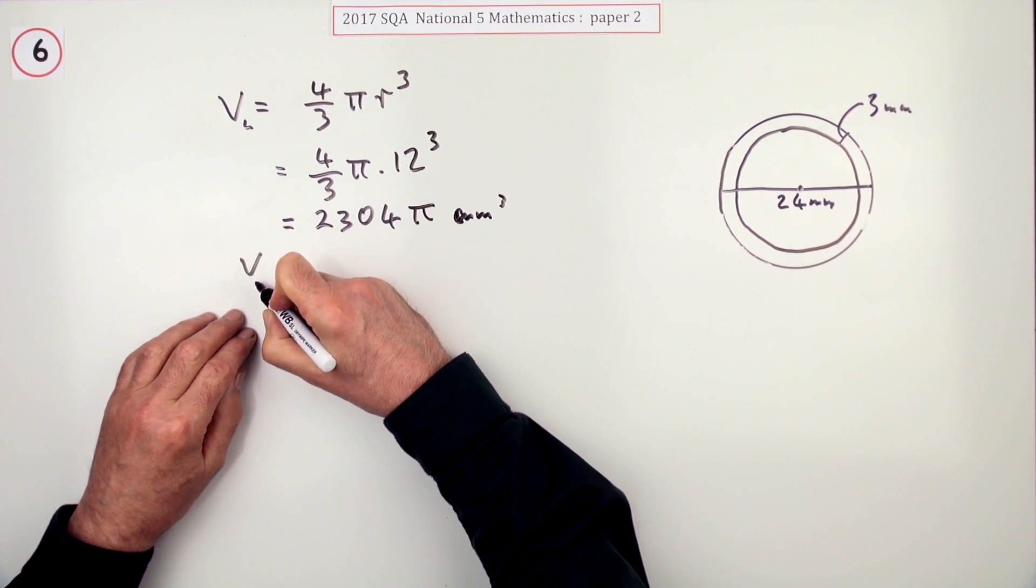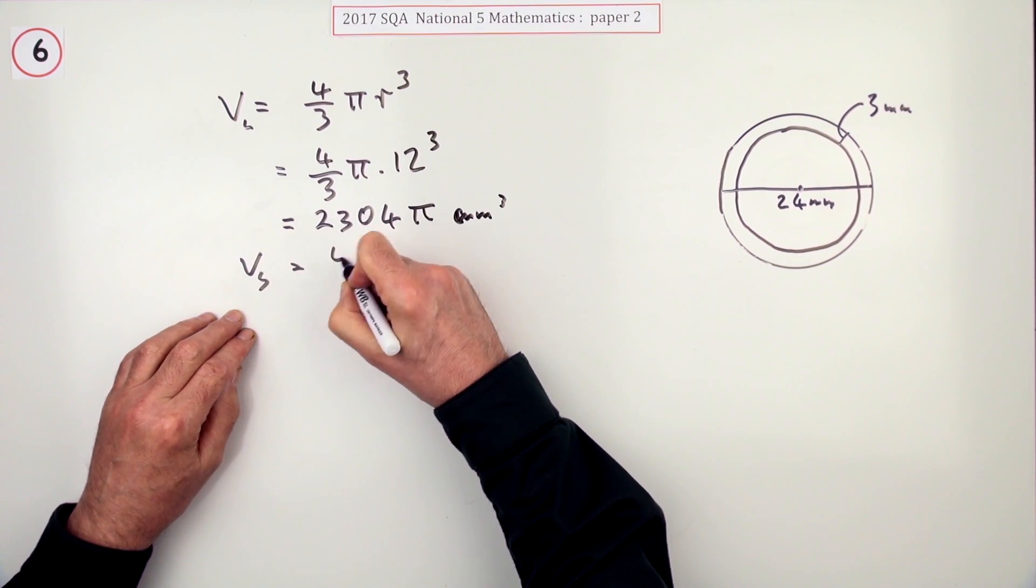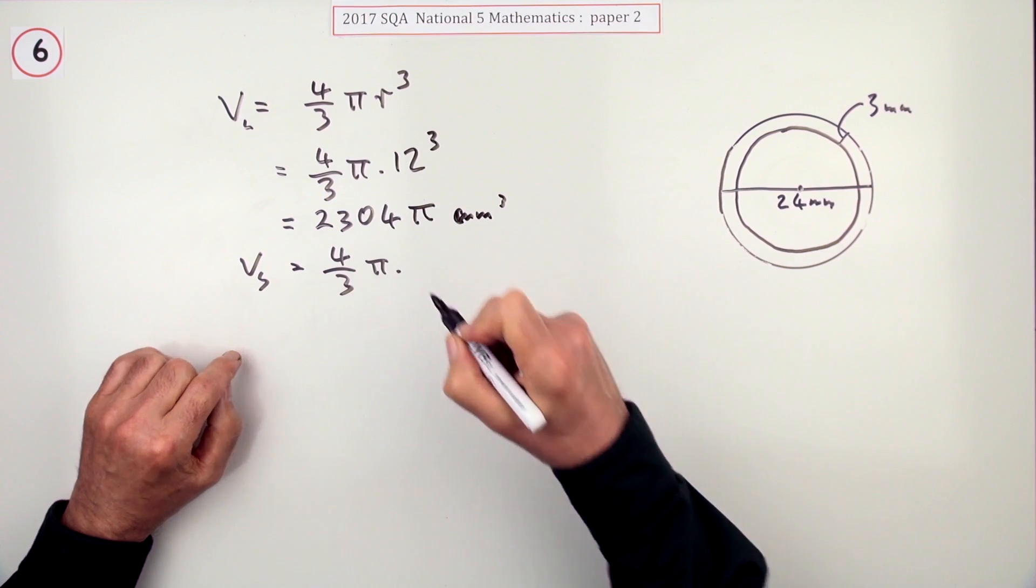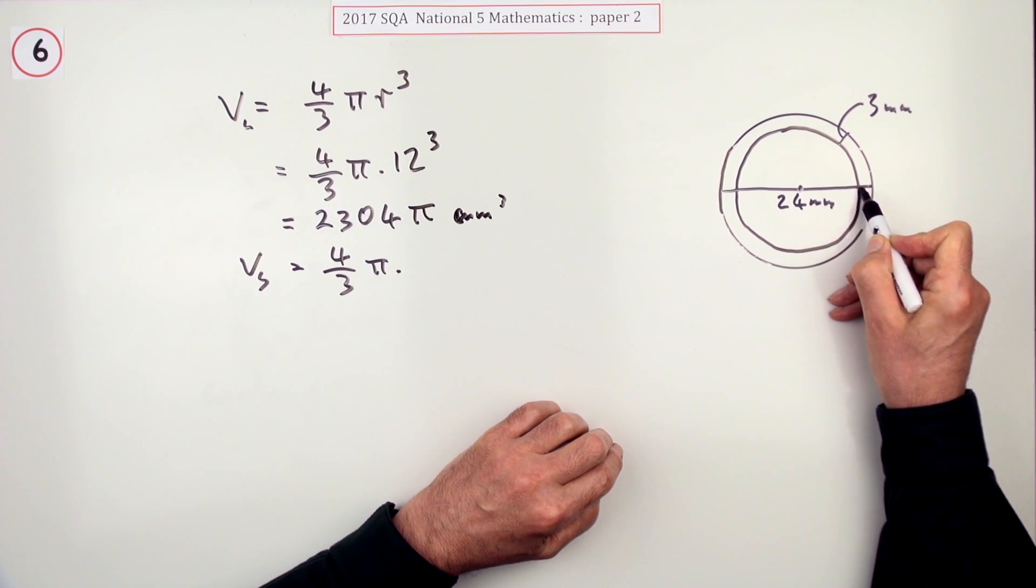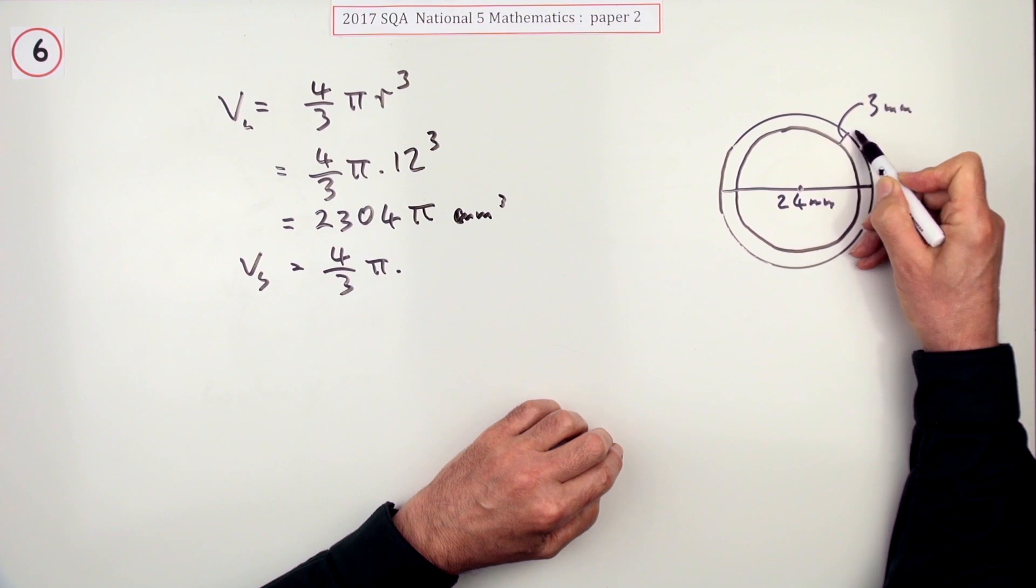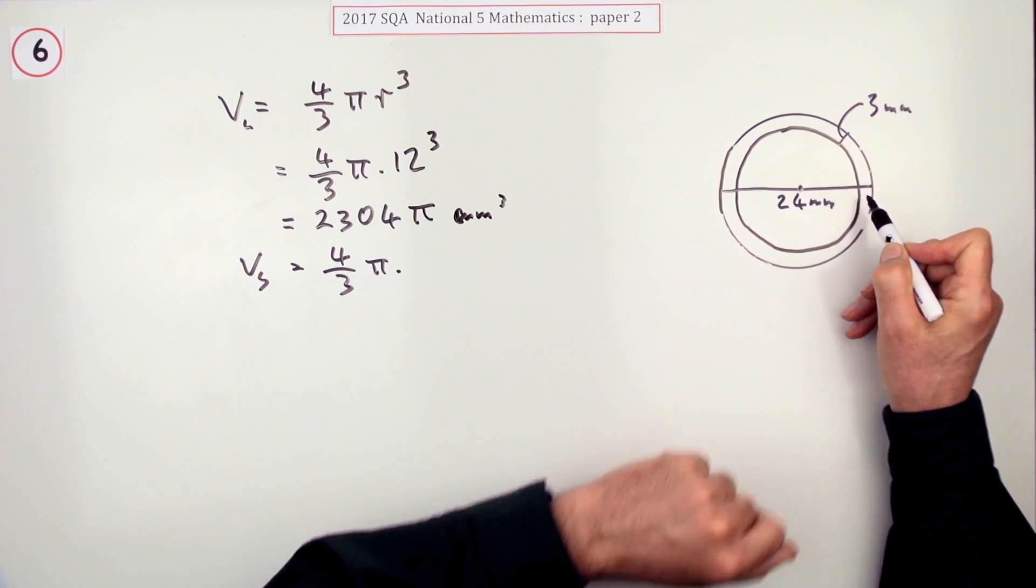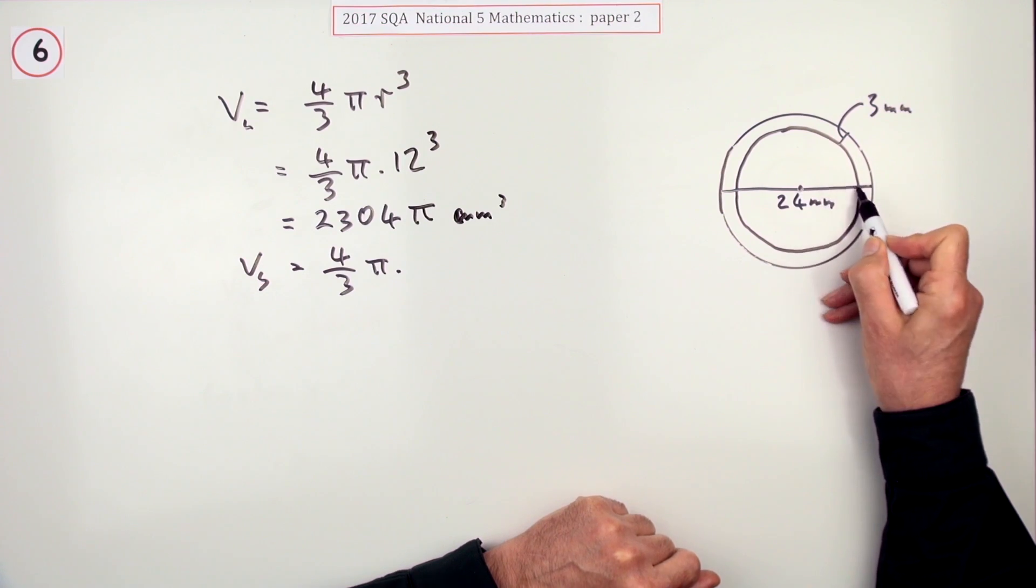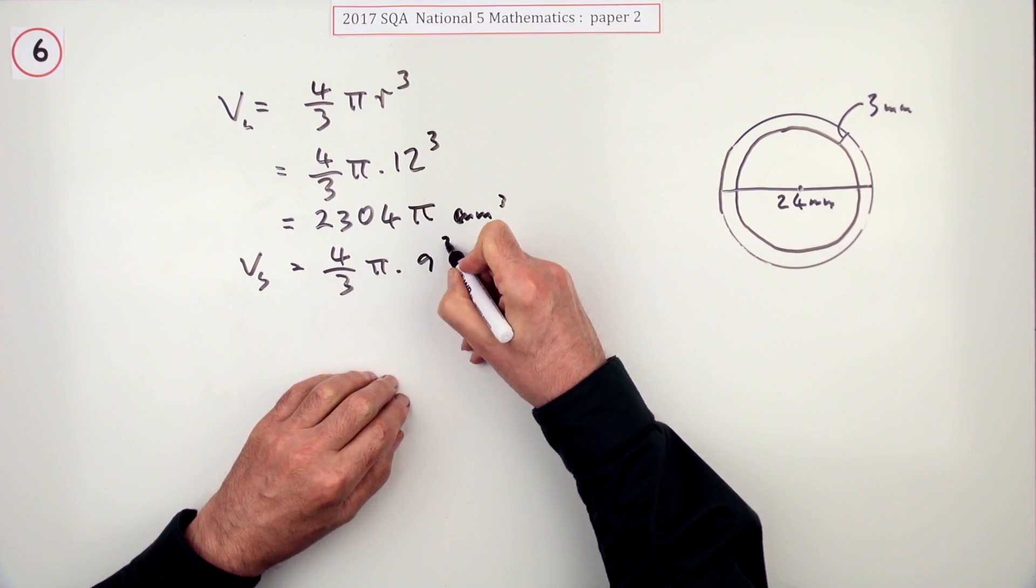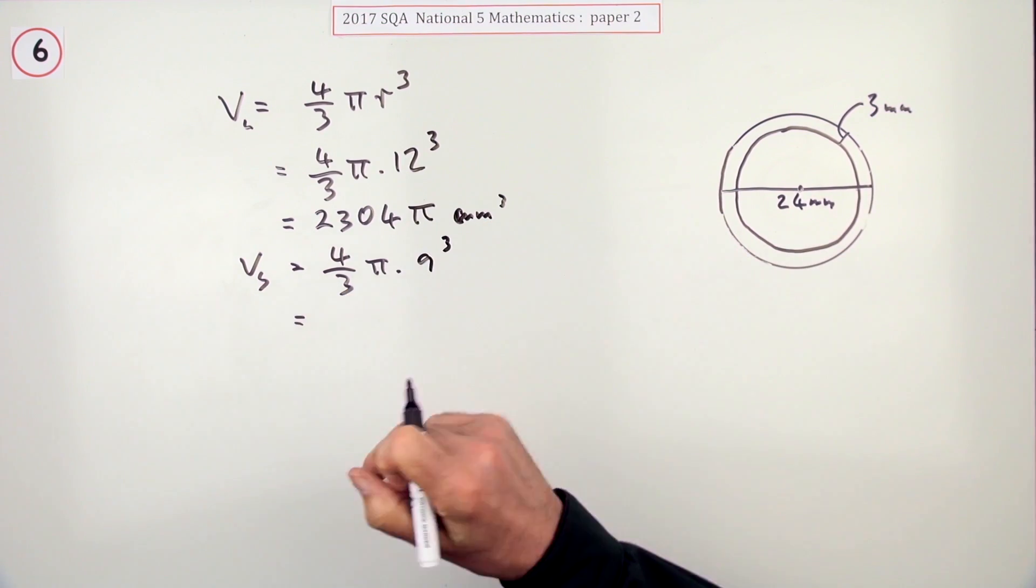Do the same with the other one. What's the volume of the small one? V = 4/3 π, now this time the radius of the larger one is 12. If that coating is 3, that 3 just comes off the radius. So the radius of this inside is going to be 12 - 3 = 9. So you type that in.